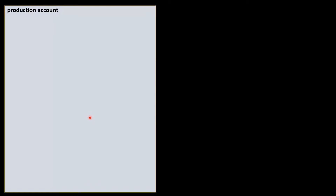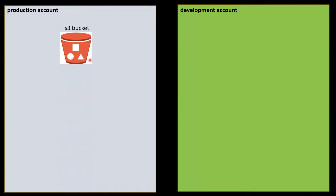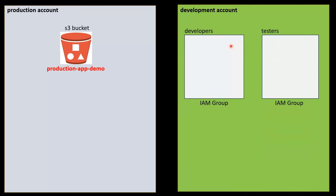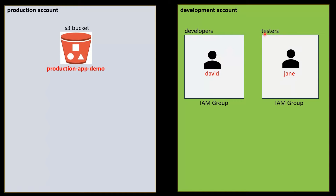We have an account named Production and another AWS account named Development. In the Production account, we have an S3 bucket where our products and applications are stored. In the Development account, we have two IAM groups named Developers and Testers. In the Developers IAM group, we have a user called David, who is a Developer. And in the Testers IAM group, we have a user called Jane, who is a Tester.